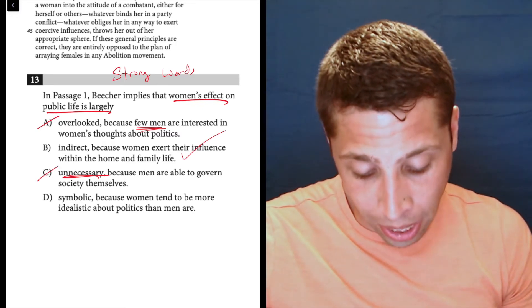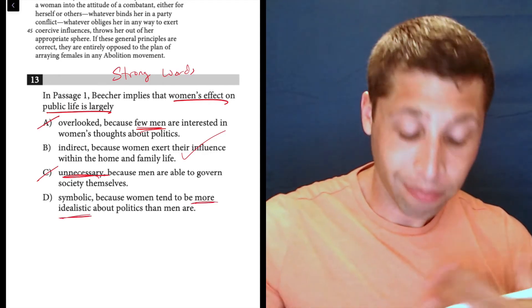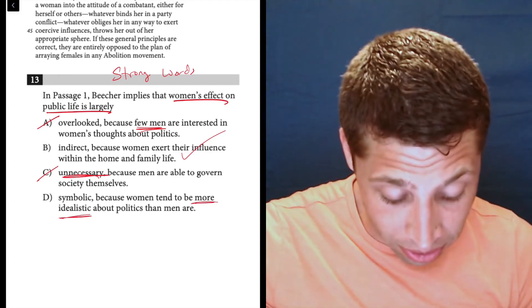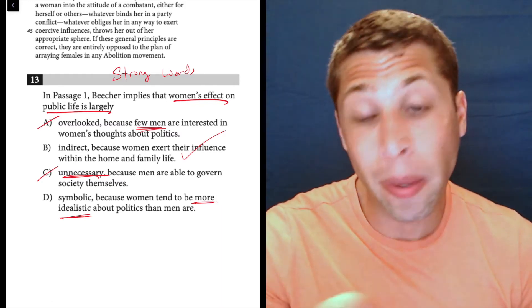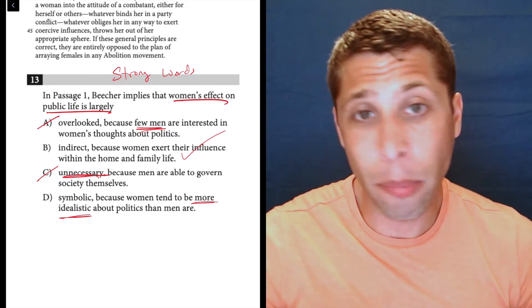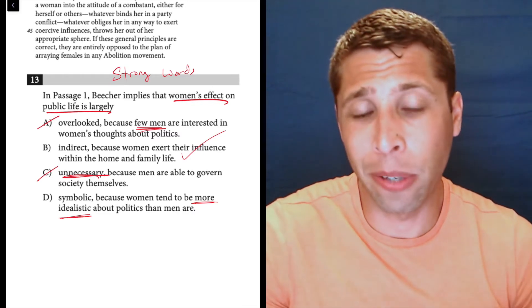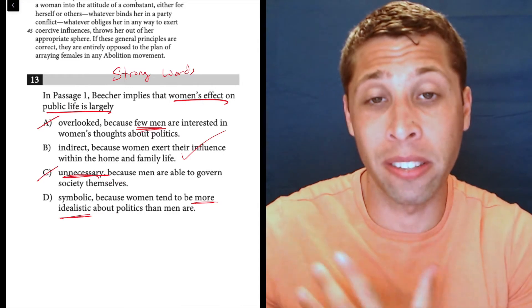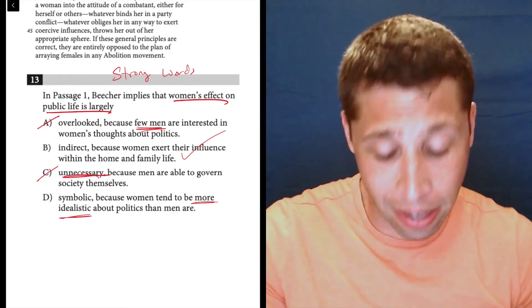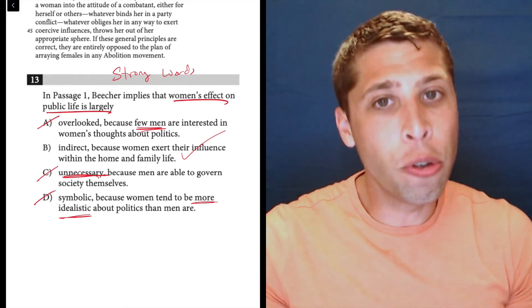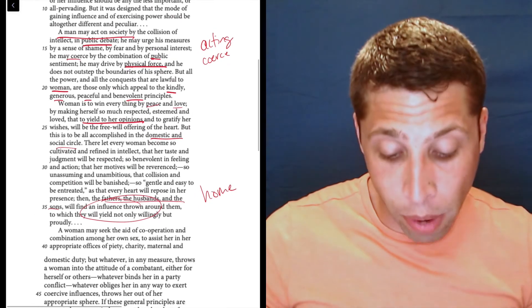Symbolic because women tend to be more idealistic about politics than men are. Well, more idealistic is almost wrong for the same reason that few men is wrong in choice A. It's kind of quantifying things. It's making a comparison about something that we just never really talk about. We don't know whether men or women are idealistic. We just, they don't get into anyone's specific views. They just talk about how those views are kind of transmitted. So, too specific, not in the passage. And B does match with these two paragraphs that we read.